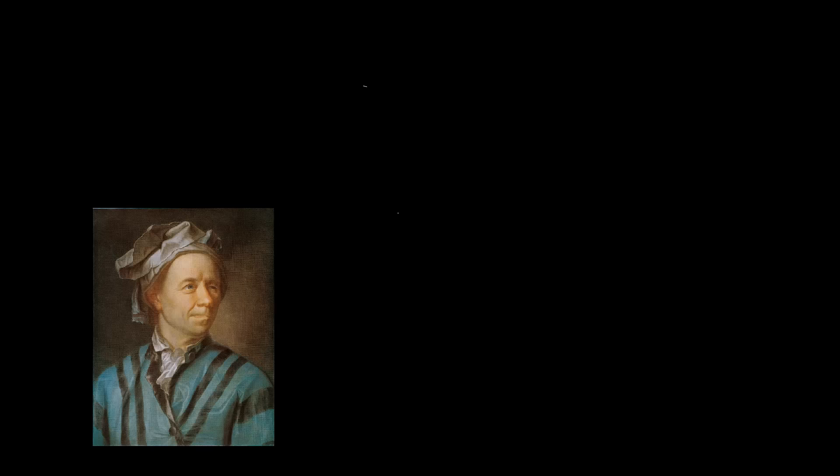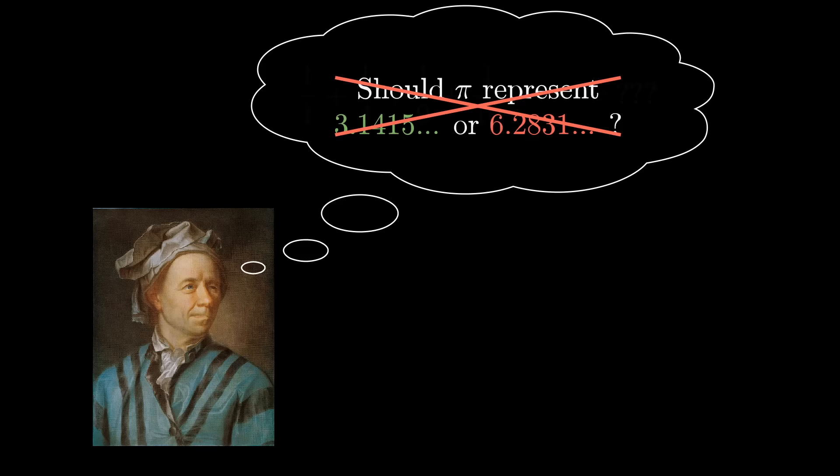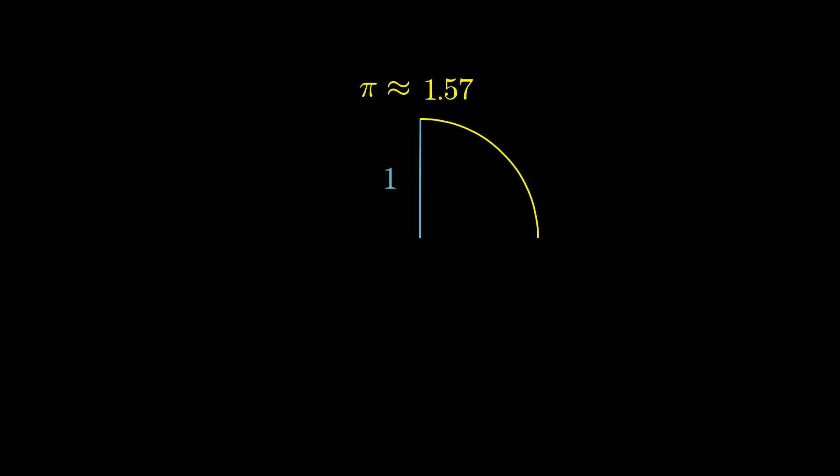It's often joked that formulas and math have to be named after the second person to prove them, because the first is always going to be Euler. His mind was not focused on what circle constant we should take as fundamental. It was on solving the task sitting in front of him in a particular moment, and writing a letter to the Bernoullis to boast about doing so afterwards.